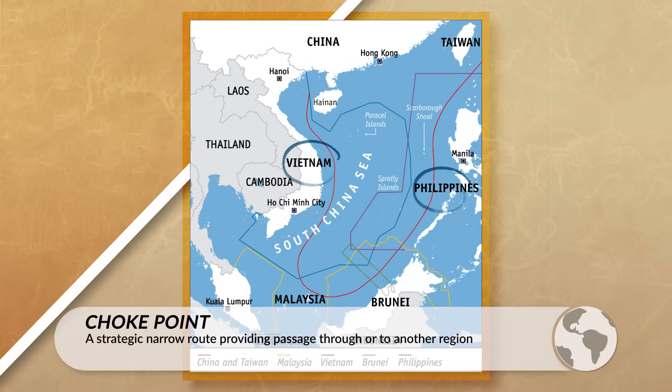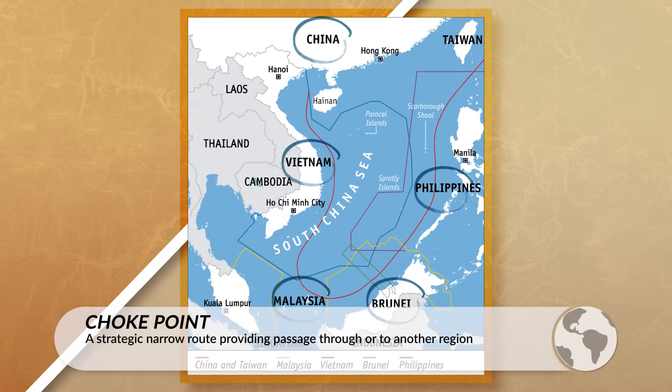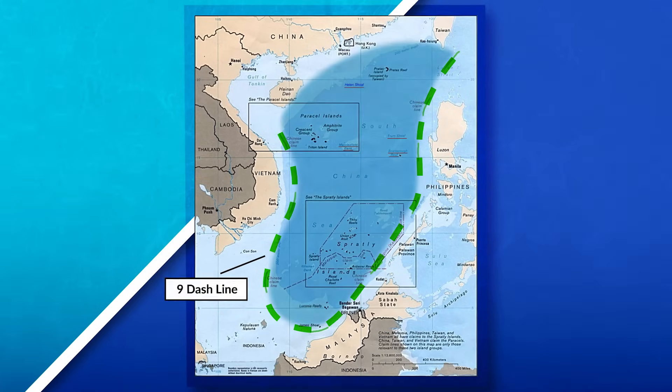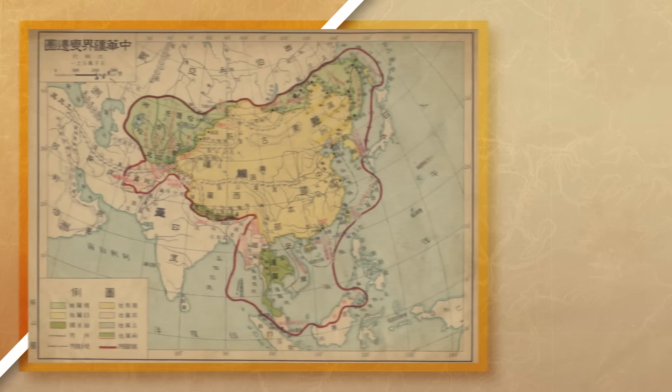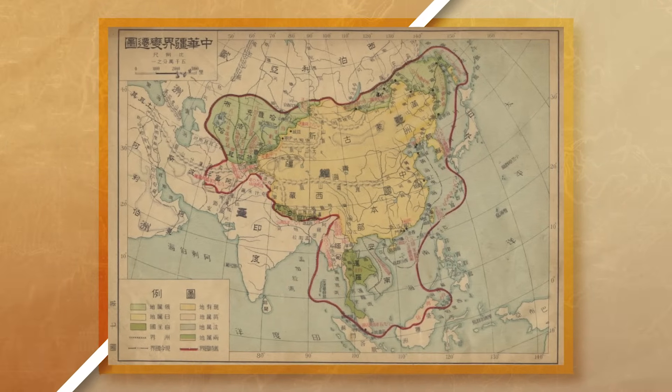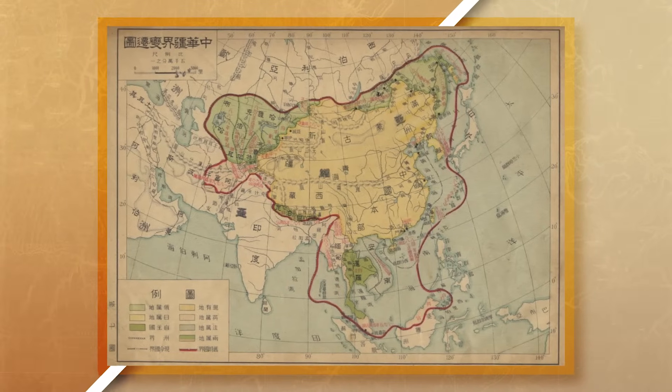Currently, there are around five countries that have a claim to part of the South China Sea. The majority of these countries use the Law of the Sea to justify their claim. China, however, has ignored the Law of the Sea and has claimed a historical claim instead, using the Nine Dash Line to claim the majority of the sea. The issue with this line is that it's confusing and originates from an old map dating back to naval expeditions in the 15th century.